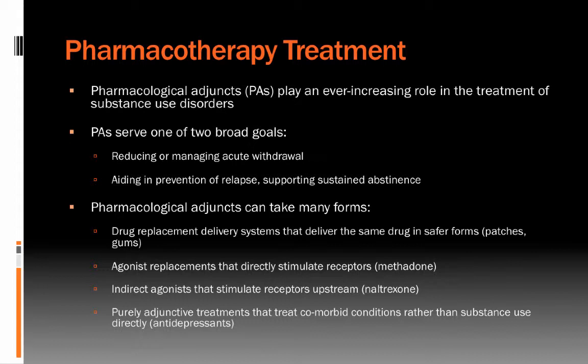Pharmacological adjuncts, or PAs, serve one of two broad goals. One is reducing or managing acute withdrawal — for people in detoxification treatment episodes, typically two to three days, the goal is to achieve medical stability as one withdraws from a substance. Other PAs try to aid in the prevention of relapse and support sustained abstinence. One form is drug replacement delivery systems that deliver the same drug but in safer forms. For example, for people trying to stop smoking, nicotine patches or gums provide a much safer means of delivery. People will still be dependent on the nicotine but getting it in a much safer way, which may be an important step toward ultimately quitting tobacco use altogether.